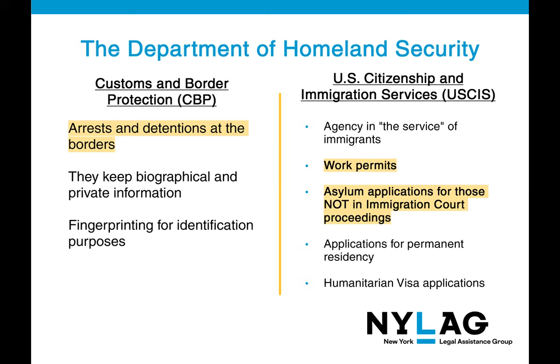For the Department of Homeland Security, there are two agencies we'll discuss first. CBP, or Customs and Border Protection, is responsible for conducting arrests and detentions at the borders of the United States. They also keep biographical and private information and are responsible for fingerprinting for identification purposes. USCIS is an agency in the service of immigrants, in charge of coordinating and handling work permits, asylum applications for those not in immigration court proceedings, applications for permanent residency, and humanitarian visa applications.